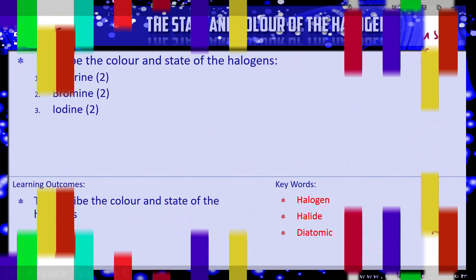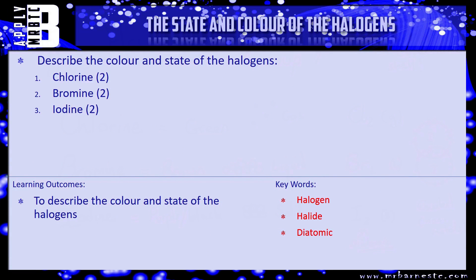This is a quick video and there are only a few things they can ask you on this. Here's an example question: describe the colour and state of the halogens. That's two marks for chlorine, two marks for bromine, and two marks for iodine. Have a quick go and we'll see how you've done in a minute.